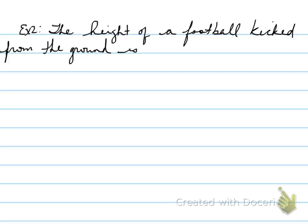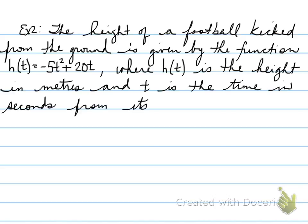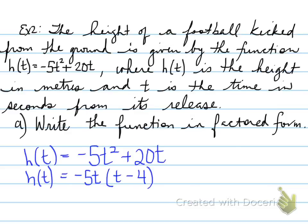Example 2. The height of a football kicked from the ground is given by the function h(t) equals the following equation, where h(t) is the height in meters and t is the time in seconds from its release. You're asked now to write the function in factored form. Looking at this equation, you should notice that it is just common factoring. So negative 5t squared plus 20t, you can take a common factor of negative 5t away. And this is what you get. h(t) equals negative 5t times t minus 4. This is the equation in factored form.